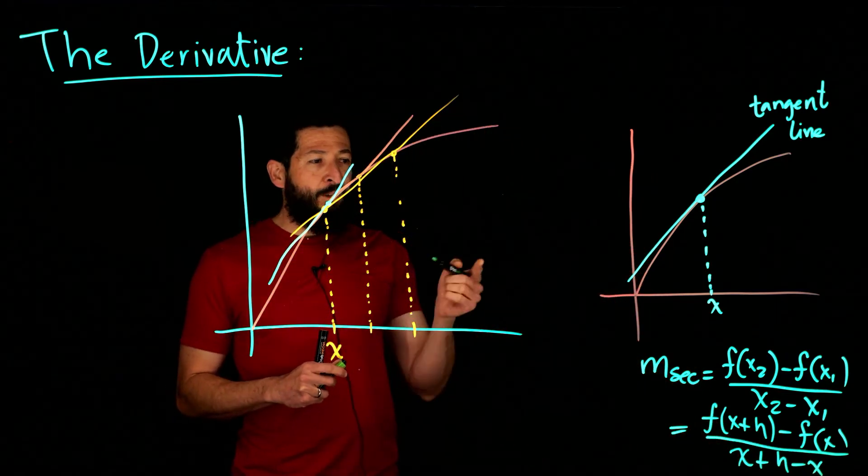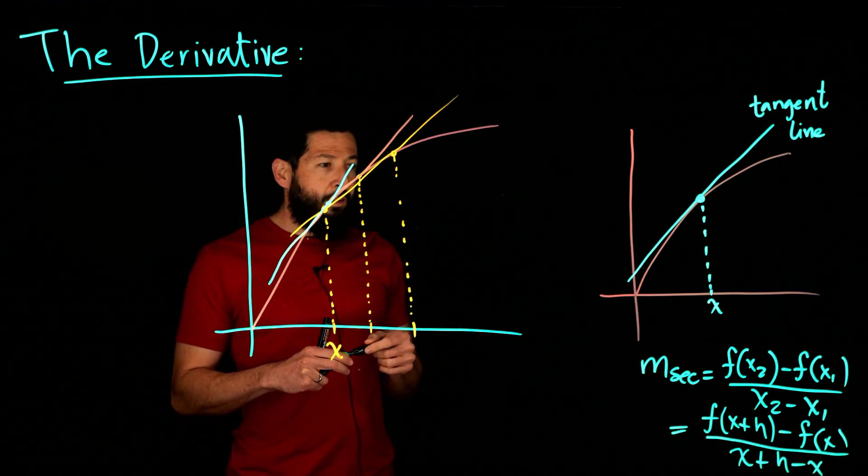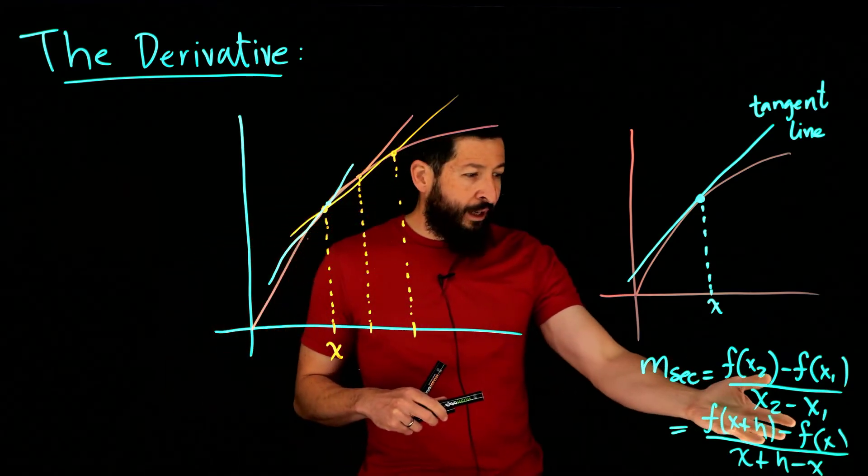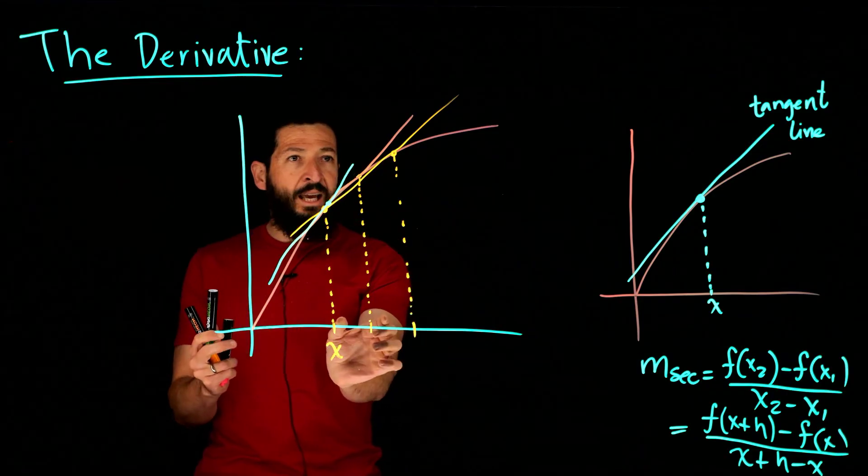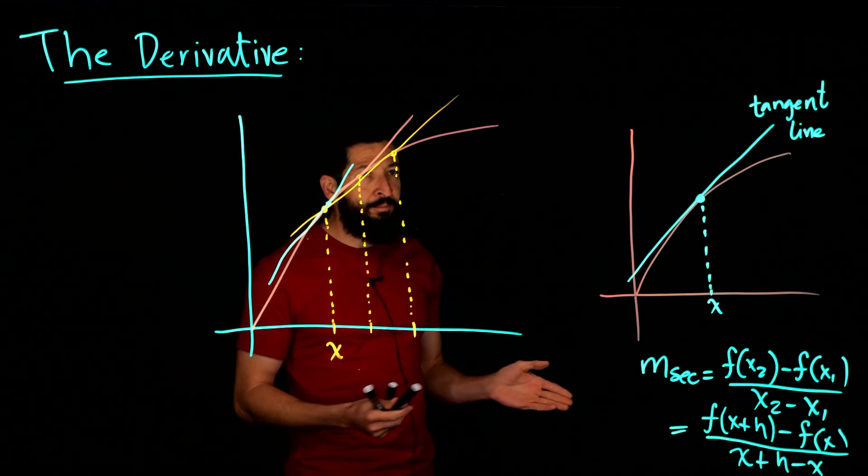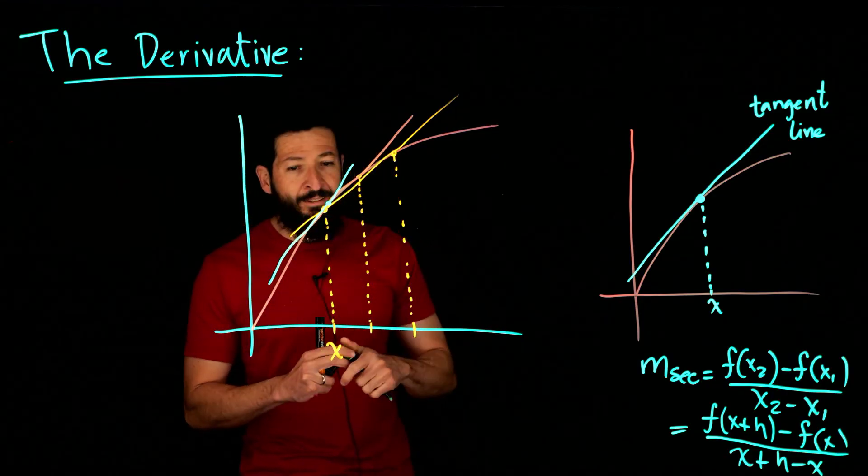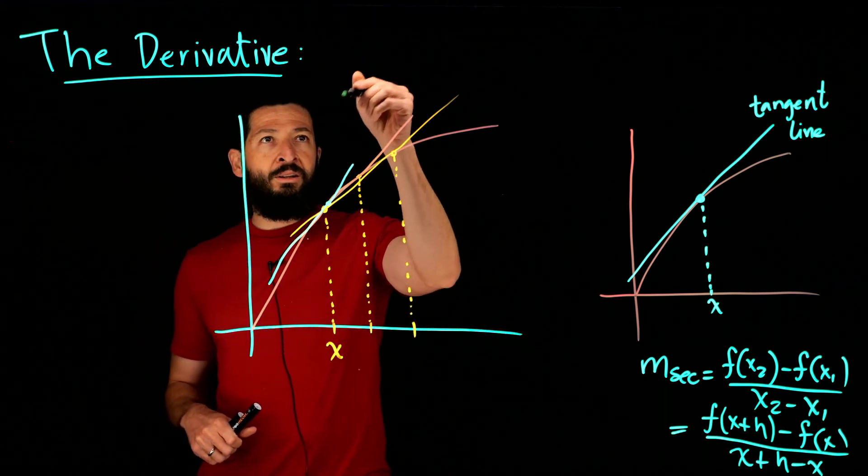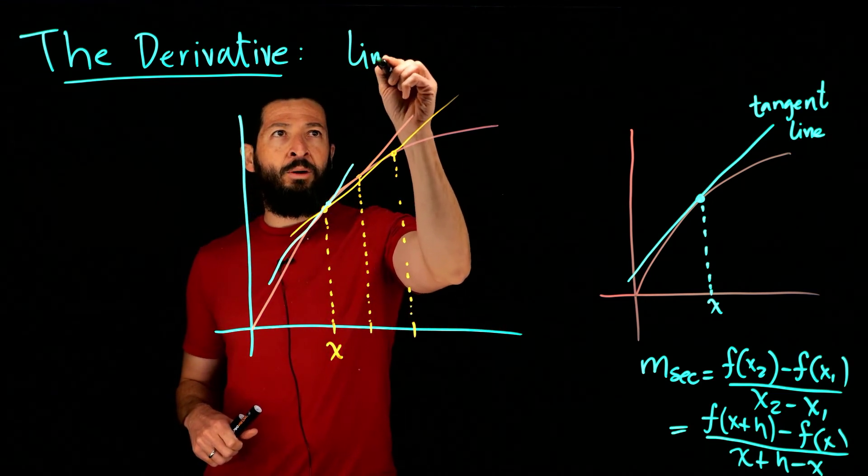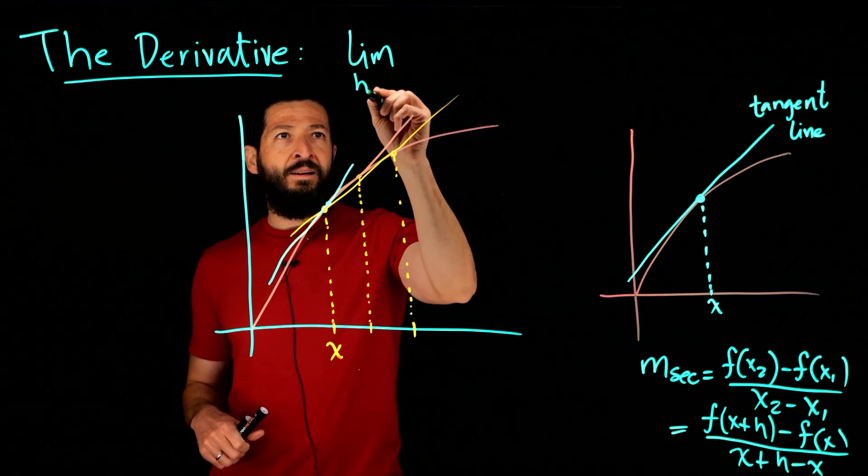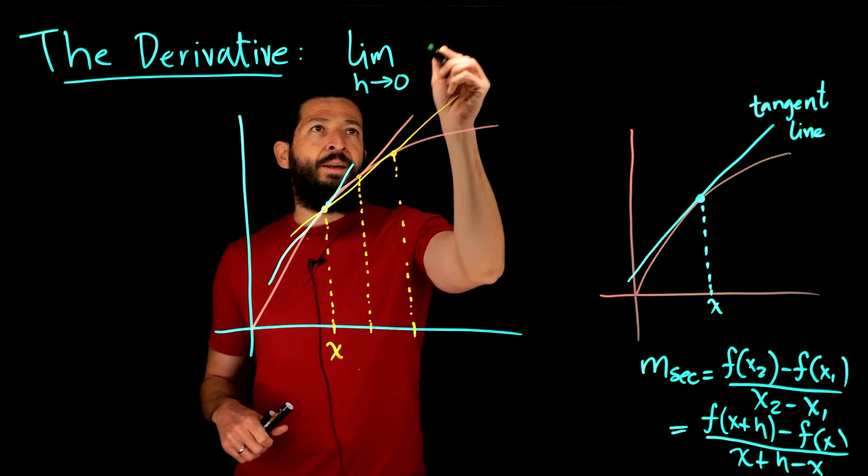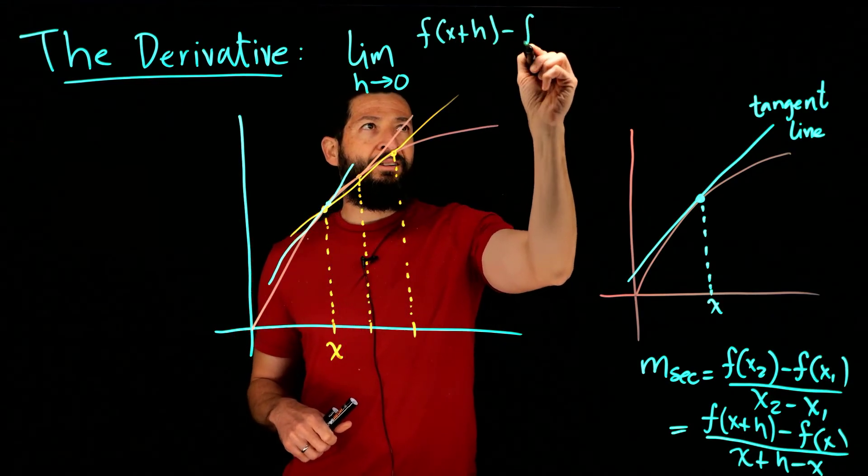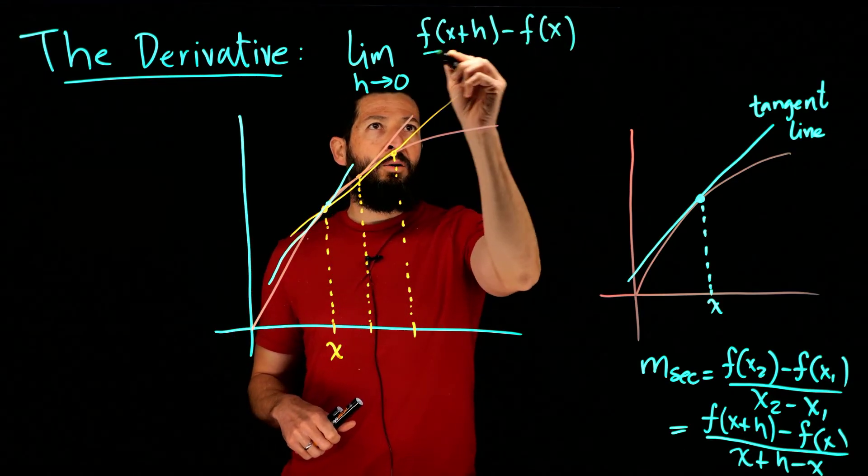The slope of the secant line becomes that right there. What can I do now to make that quantity h be really really small? Well we developed the mechanism for this in the previous lectures and we called it the limit. So here you're going to have that the derivative is defined as the limit as h goes to zero of f of x plus h minus f of x all over h.